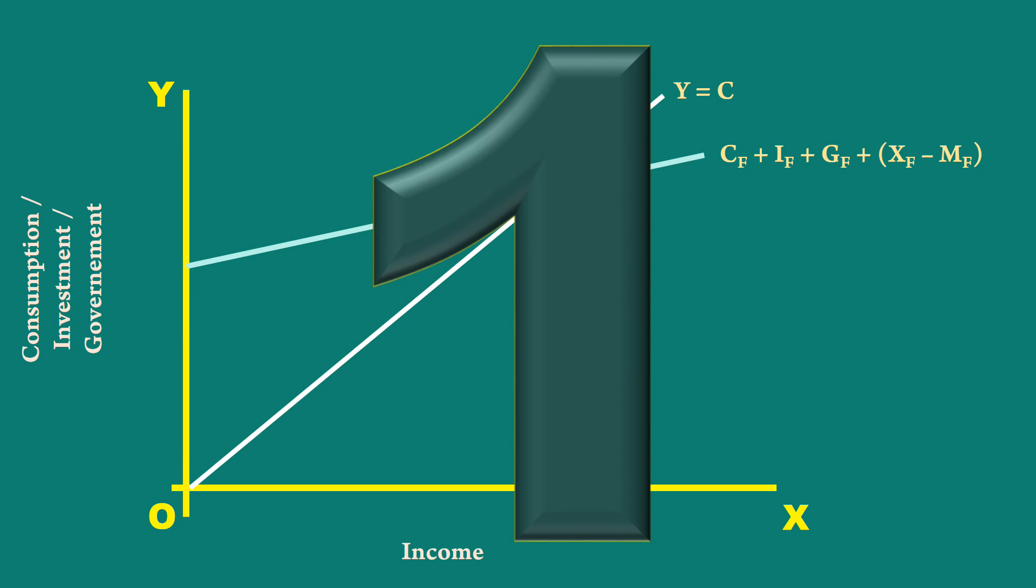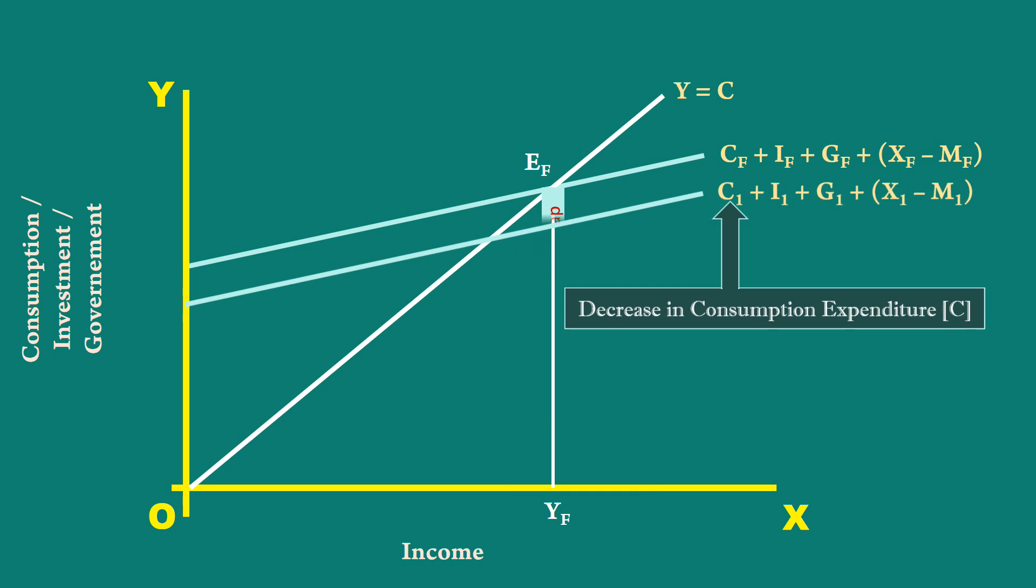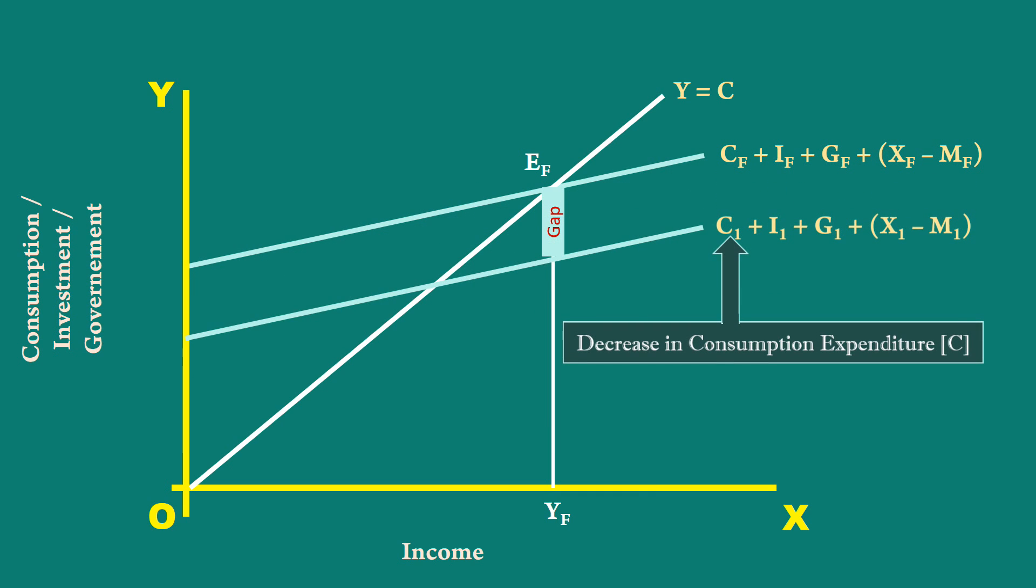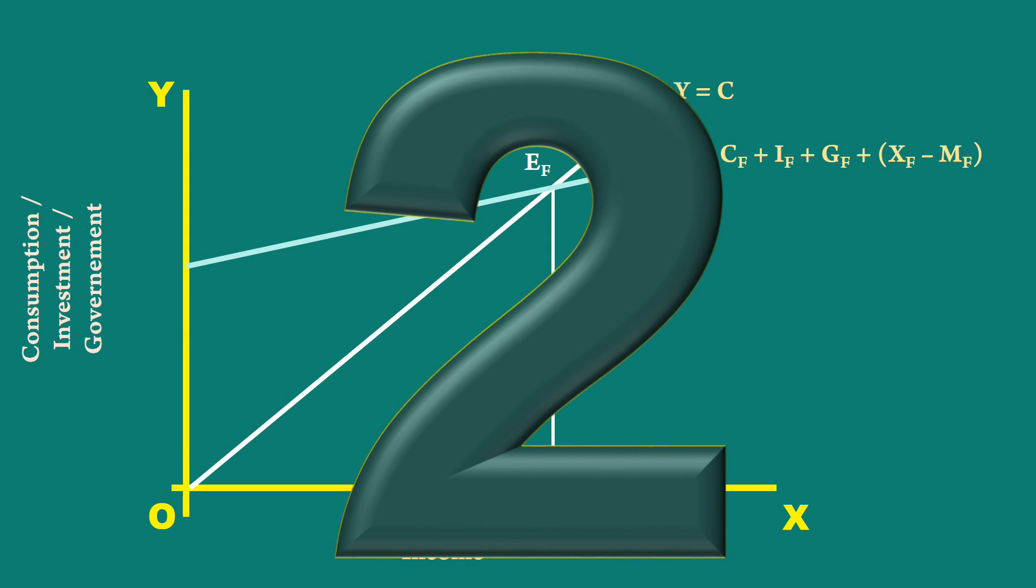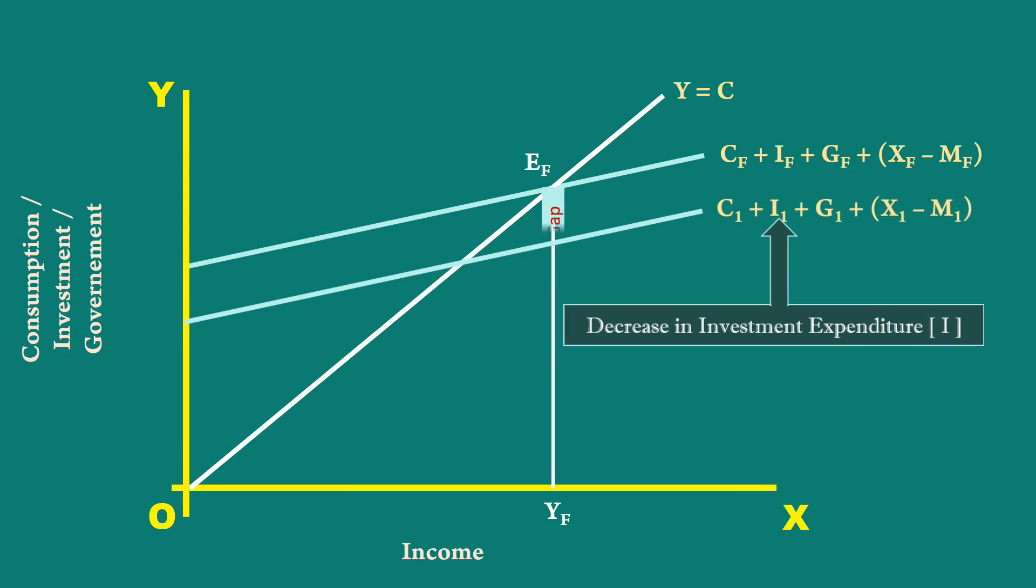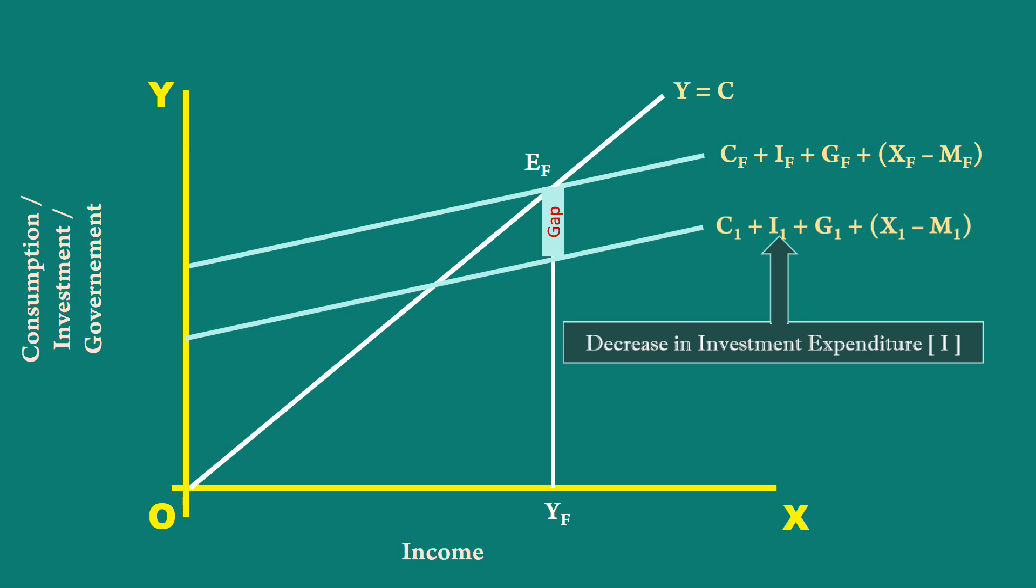1. A decrease in consumption spending pushes the aggregate demand curve down. 2. A decrease in investment spending by the business people also will make the curve to move down.